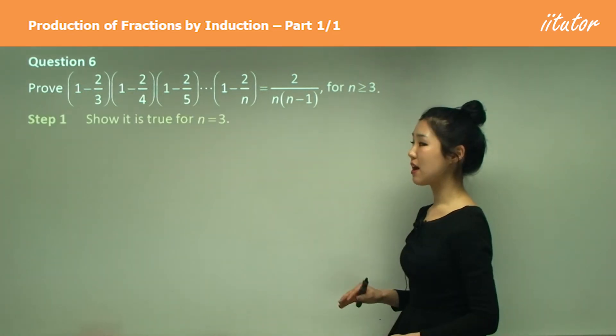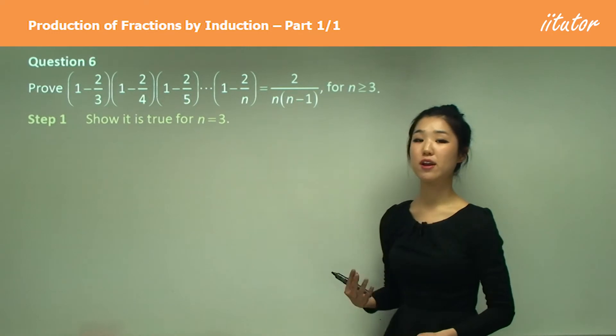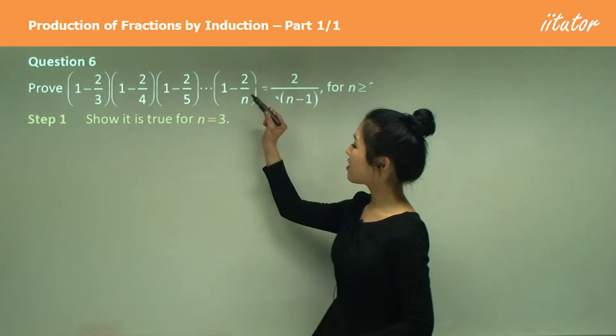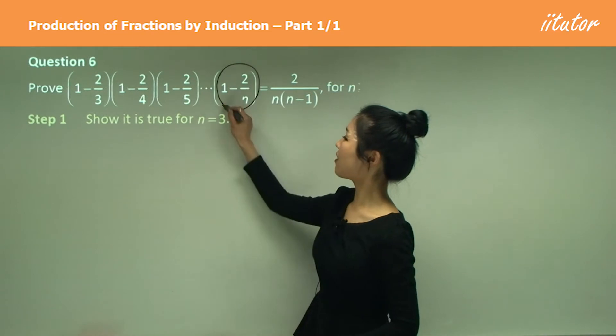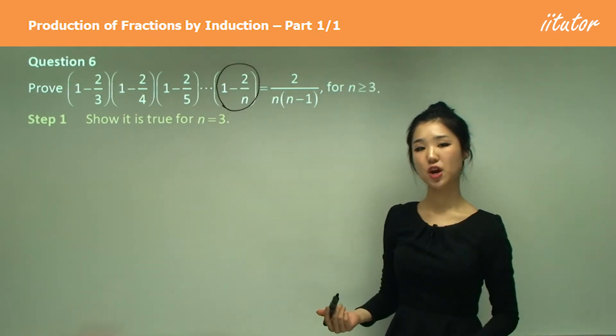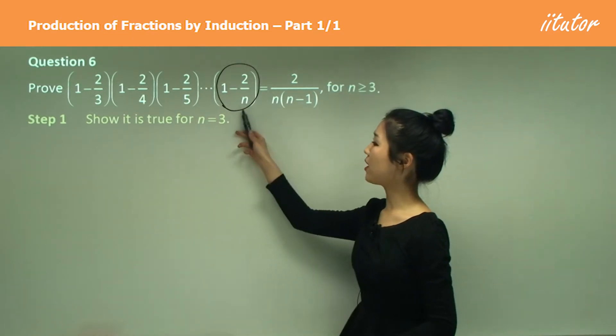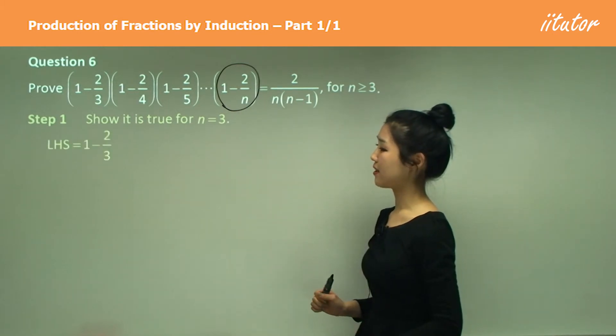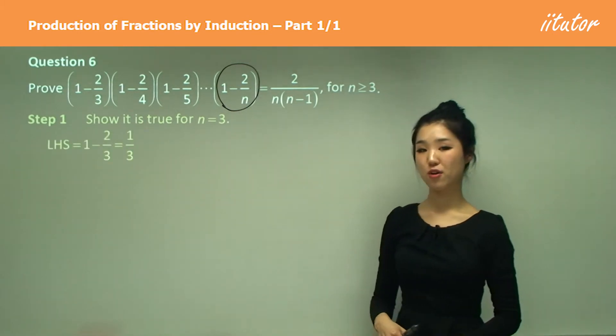So when we do our step one, we have to show it's true for n equals 3. And as I said, for our left hand side, this last term here is our general term. So I want you to sub in 3 into here, just like that. So that will simplify to 1 on 3.